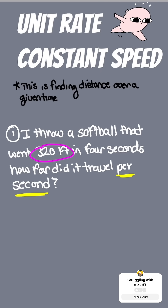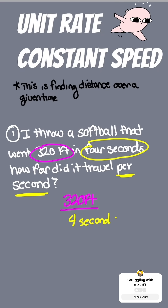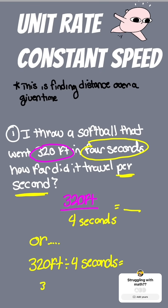Well, it went 320 feet in all and it took four seconds to get there, so I would put the distance over the time, which is basically the same thing as saying what is 320 feet divided by four seconds. And that would be — after I do the long division — 80 feet per second.